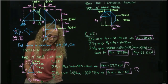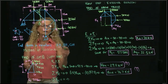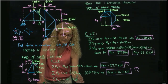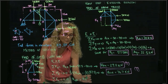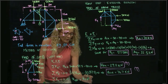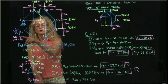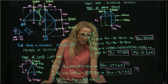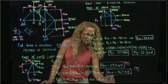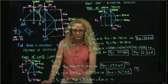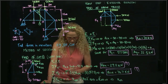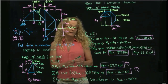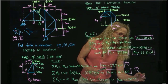Finally, summing forces in X, we have ED plus EH times cosine of theta — where cosine of theta is 4/5 — plus GH equals zero. Since we already found EH and GH, we can solve for ED. The reaction in member ED is negative 100 kilonewtons. Since we got a negative value, that member is in compression.